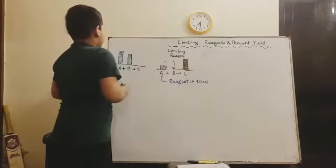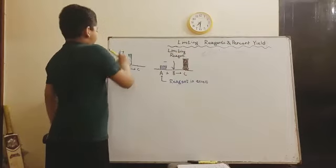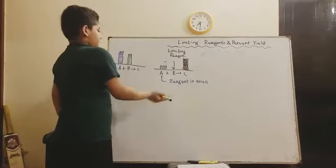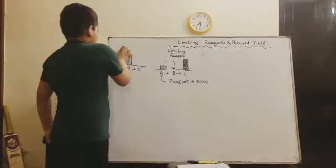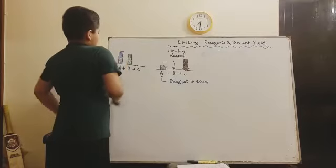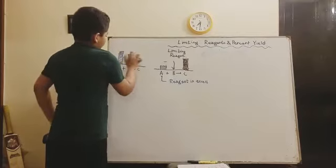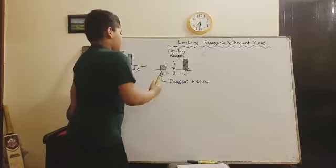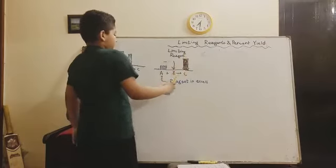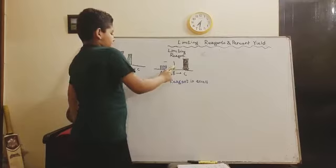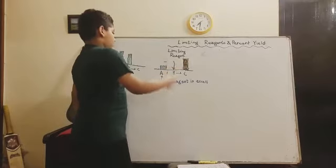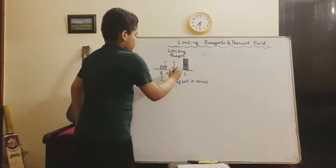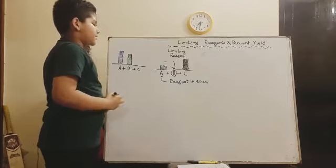Suppose one A and one B would give one C. So here as you can see, we have more A's than B's, so this is leftover A. And no matter what we do, we cannot produce any more C's because we need the B's, but the B's are running out. That's why B is the limiting reagent. That's what always happens when you think about reactions.